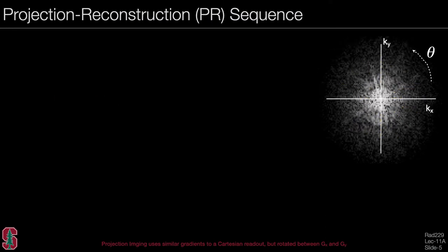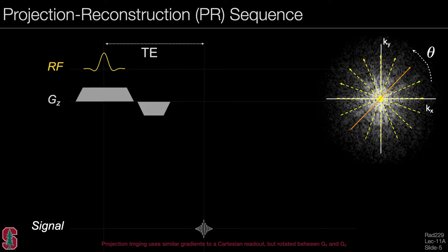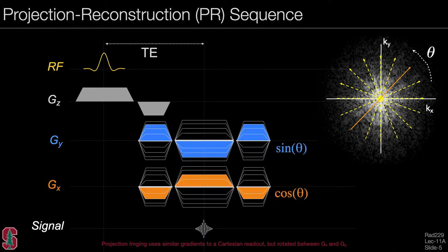Let's look at the projection reconstruction sequence. This is full projection imaging, where we sample all the way across k-space. The difference from Cartesian imaging is that instead of sampling different lines, we sample at different angles. The pulse sequence has the same excitation as Cartesian imaging, but instead of a readout and phase encode gradient, we have two gradients scaled by the sine and cosine of the angle of the projection.